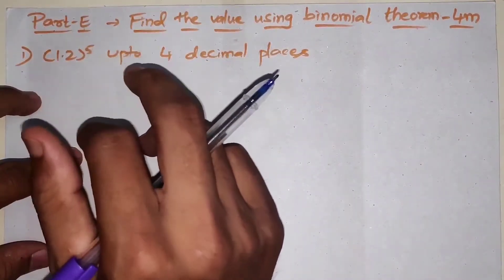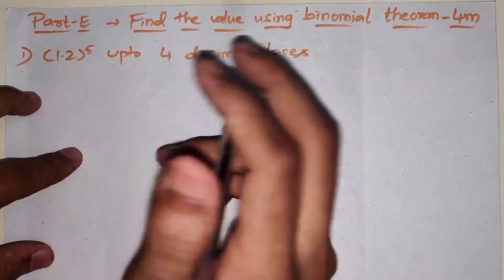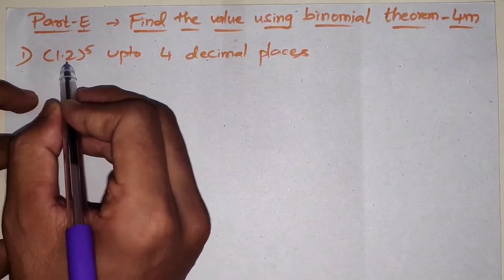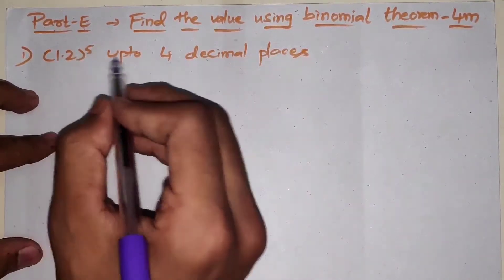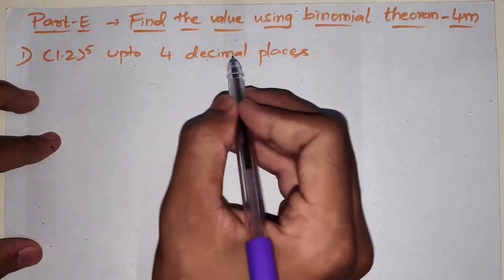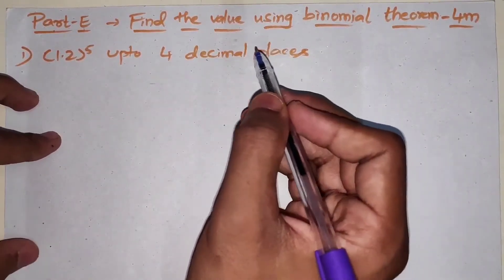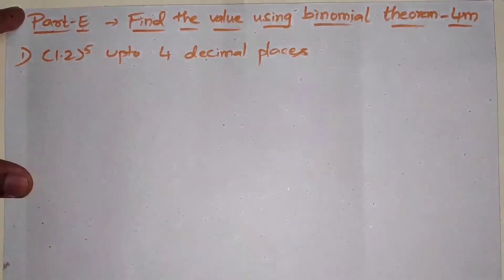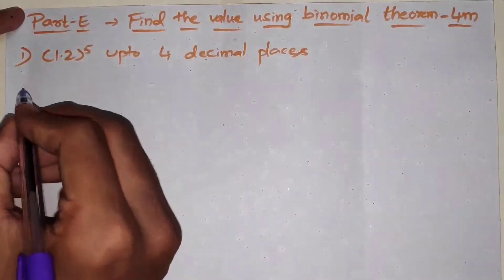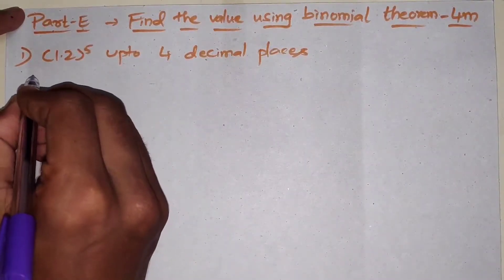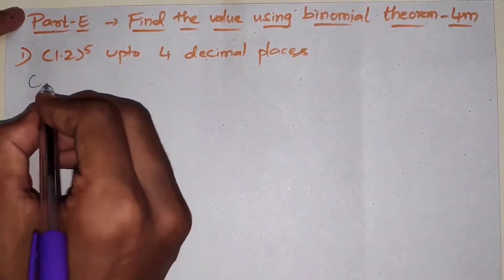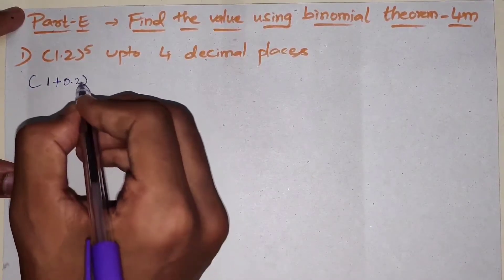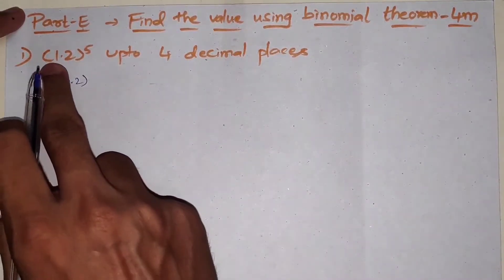One formula you need to know: one plus a, and one minus a. Now let's solve. For example, if the question is: find the value of 1.2 to the power of 5, up to 4 decimal places. First, the formula is to expand. Notice that 1 plus 0.2 equals 1.2. So we can write 1.2 to the power of 5 as (1 + 0.2) to the power of 5.